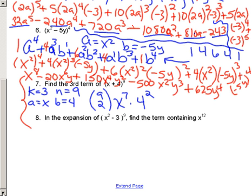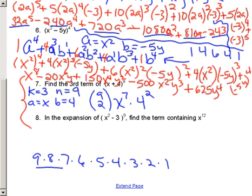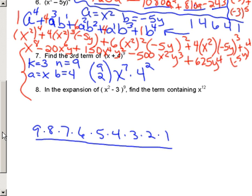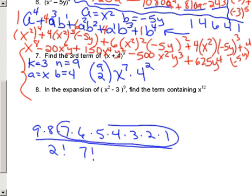9 factorial means 9 times 8 times 7 times 6 times 5 times 4 times 3 times 2 times 1. There is a button on the calculator, but you need to know how to cancel things out. The formula is n factorial over j factorial times n minus j factorial — so this is 9 factorial over 2 factorial times 7 factorial. The 7 factorials cancel, leaving 9 times 8 over 2 times 1. That gives us 36.